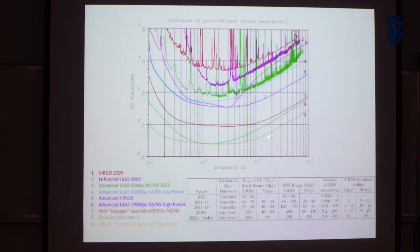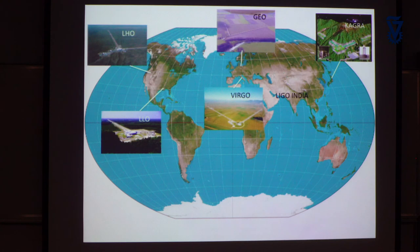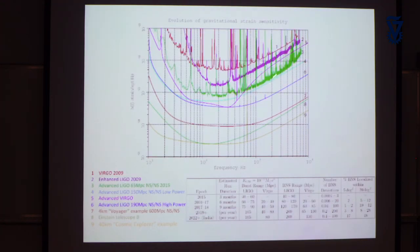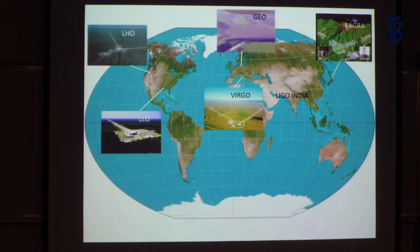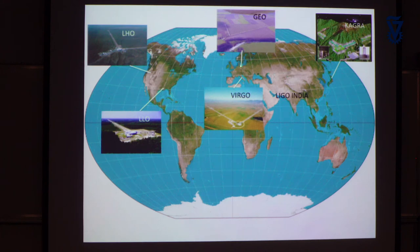There are millions of resonances in the data — violin modes in the strings holding the masses, calibration lines, and 60 Hz multiples in the United States. The two detectors that made the detection are in Washington State and Louisiana. Other detectors include Virgo in Italy, the German GEO research detector, and two detectors being planned: one in Japan and one in India, expected in the 2020s.